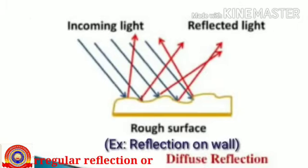Next, irregular reflection, also called diffuse reflection, happens on rough surfaces. For example, reflection on a wall. When light falls on a rough surface it undergoes irregular reflection, which is also called scatter reflection.